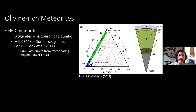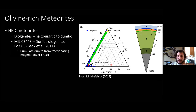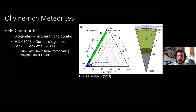There are olivine-rich meteorites in the record. Among the HED meteorites, diogenites contain olivine but not much. There is one dunitic diogenite — Miller Range 03443, studied by Beck et al. 2011 — thought to be a cumulate dunite from a fractionating magma chamber on Vesta. Here's a chart showing all the materials in diogenites, composed primarily of orthopyroxene, clinopyroxene, and olivine, with very few dunitic materials.